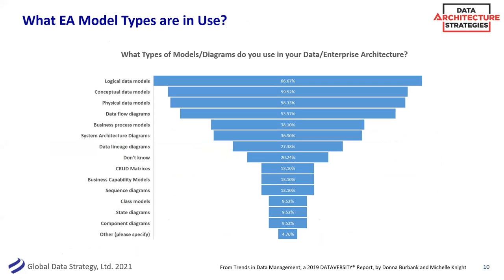Each year I work with Dataversity on a trends and data management report. We asked a question a couple years back: what types of diagrams do you use in your data and enterprise architecture? This trends towards conceptual, logical, and physical data models. I found it interesting that logical and conceptual was higher than physical — to me, that's a great statement that people are really using these for business audiences. I've had great success having conceptual data models as part of conversations with business sponsors and data owners.